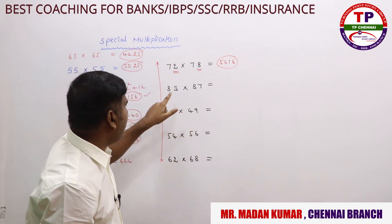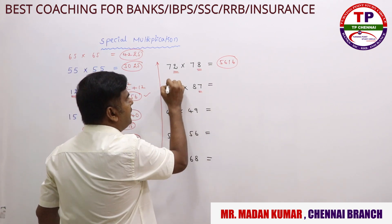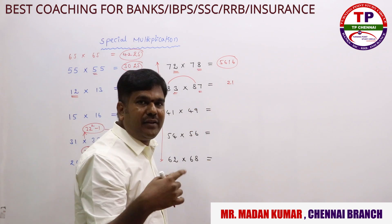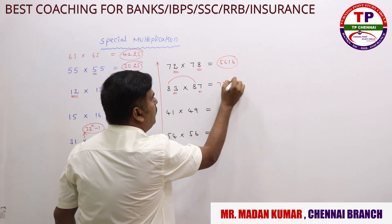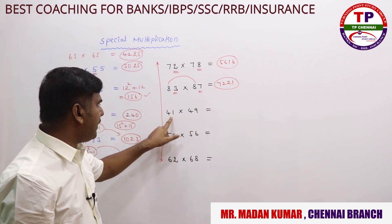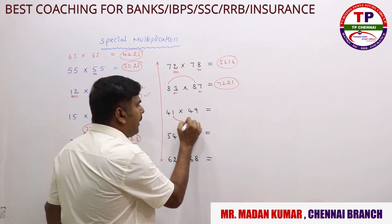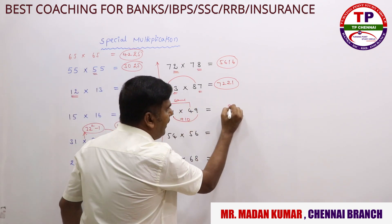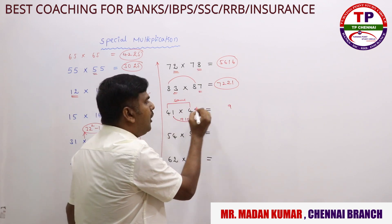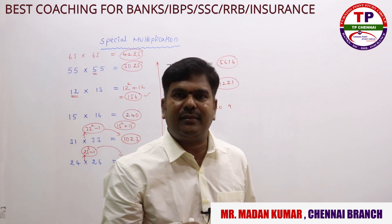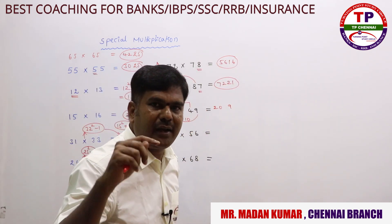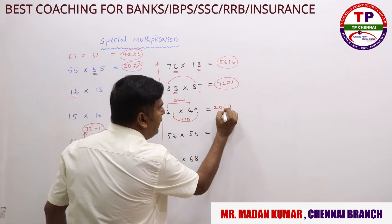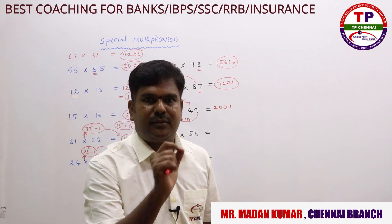For 83×87: 7+3 = 10, first digit 8 is common. Unit digits: 7×3 = 21. First digit: 8×9 = 72. Answer is 7221. For 41×49: 9+1 = 10, first digit 4 is common. Unit digits: 9×1 = 9. First digit: 4×5 = 20. But since we're working with numbers above 32, we get 4-digit values, so we need to add a zero: the answer becomes 2009.